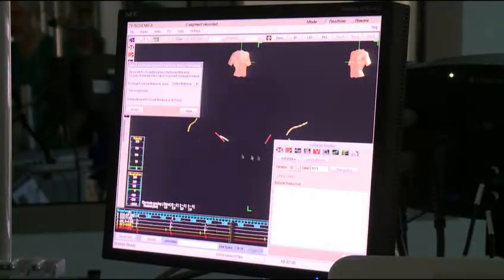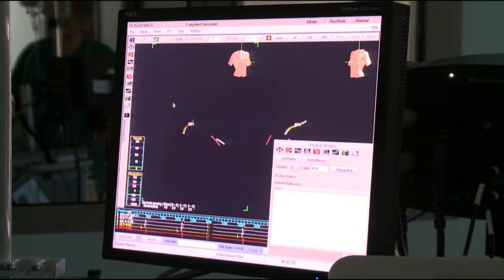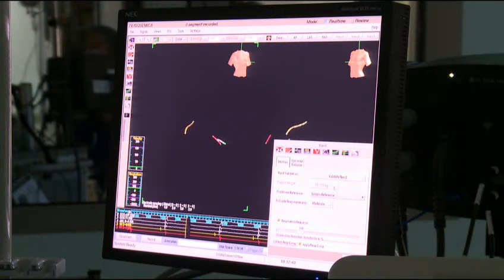Ahora lo que vemos en la pantalla son los tres catéteres que están introducidos en el corazón, dos en el lado derecho y uno en el lado izquierdo. Ahora lo que vamos a hacer es la reconstrucción anatómica de la cavidad, en este caso del ventrículo izquierdo.